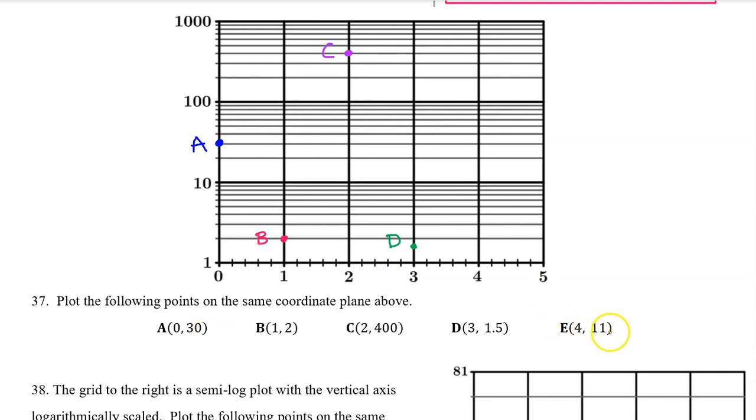Point E (4, 11). So here's 4. 11 will be past the 10, but as we pass 10, we count by 10s. So this is 10 on the bold line. The next line up is 20. So 11 is just a little bit past 10. So we'll just put it right about here. So this is point E.